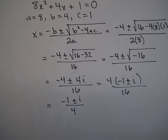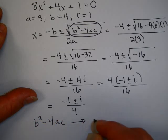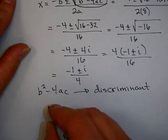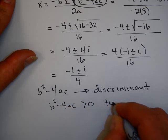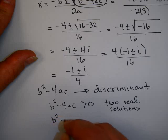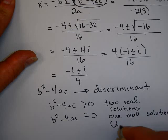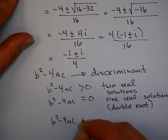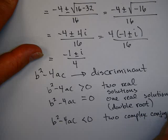In the quadratic formula, the expression b² − 4ac has a special name: it's called the discriminant. The discriminant tells you the nature of your roots. If b² − 4ac is positive, there are two real solutions. If b² − 4ac equals 0, there is one real solution (a double root). If b² − 4ac is negative, you have two complex conjugate solutions.